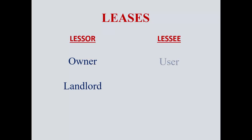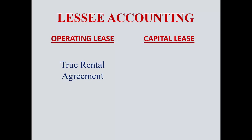To review: the lessor can be thought of as the landlord or the official owner. The lessee is the person leasing the asset. An operating lease is a true rental agreement, while a capital lease really isn't a lease at all — it's just a different financing arrangement that's called a lease.